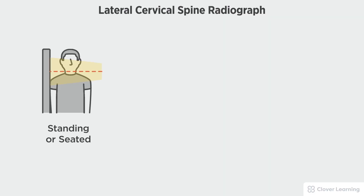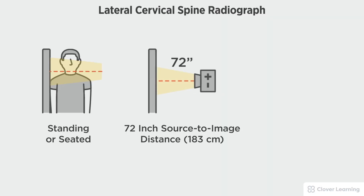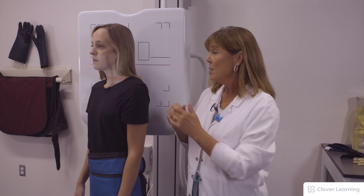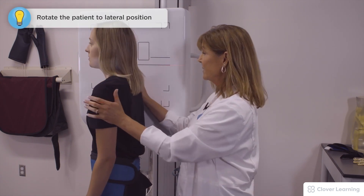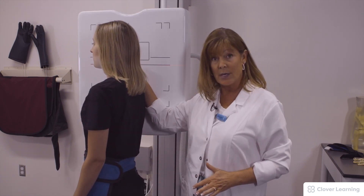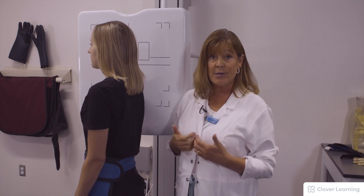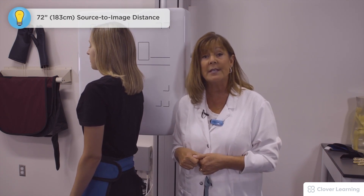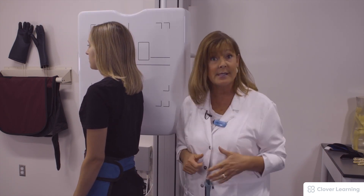In this view we will be demonstrating the lateral cervical spine. The lateral cervical spine should be performed with the patient standing or seated at the upright bucky or lying on the table with a 72 inch source to image distance and no tube angulation. The patient is turned completely sideways with a right marker indicating the right anterior side. The angle is removed and the central ray is at C4.